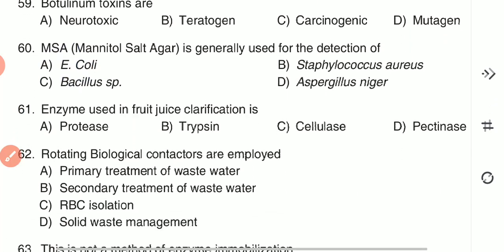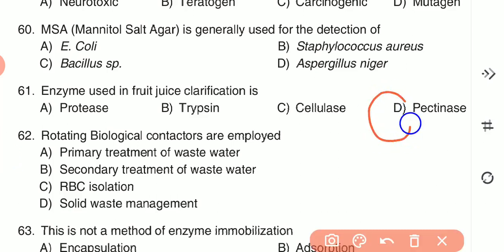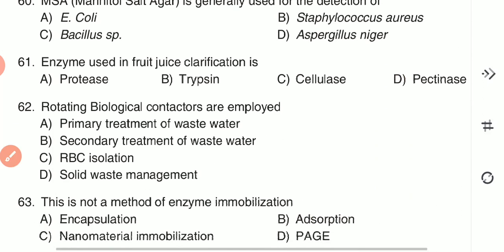Question 61: The enzyme used in fruit juice clarification is — (A) protease, (B) trypsin, (C) cellulase, or (D) pectinase. Pectinase is the enzyme used for fruit juice clarification to remove haze formation — option D is the correct answer.